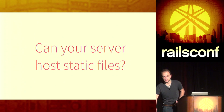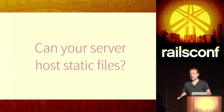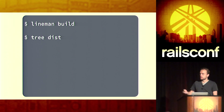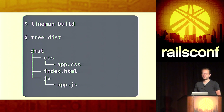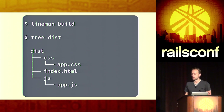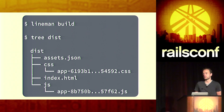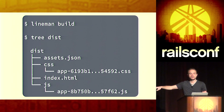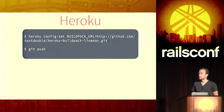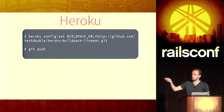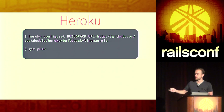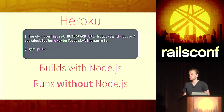The deploy story is similarly easy. Since Lineman is just a static asset generating tool — can your server host static files? Then you're good. When you run 'lineman build' and tree out its dist directory, you have an HTML file that references a CSS file and a JavaScript file, both already concatenated and minified and ready to deploy. There's a single flag in the config you can set and then just like Rails, you get asset fingerprinting — really nice for deploying when you have a CDN. Pushing to Heroku is also really easy. We wrote a custom build pack — you set it up, say 'git push,' it builds with Node.js, but at runtime we don't need it, so it just runs statically without Node.